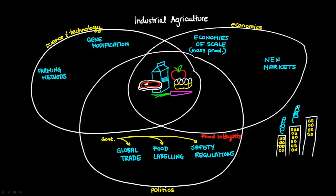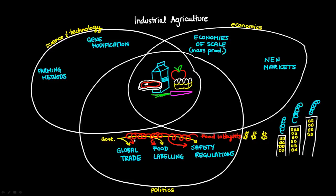The food lobbyists represent companies that are mass producing goods for consumption by the general population. Because these companies are very wealthy, they can actually influence many of the decisions that the government makes via these food lobbyists. For example, you can't say 'limit red meat consumption' because the beef lobbyists would fight against that, so instead a health warning issued by the government would have to say 'limit your intake of saturated fat.' Those sorts of things are controlled by food lobbyists.